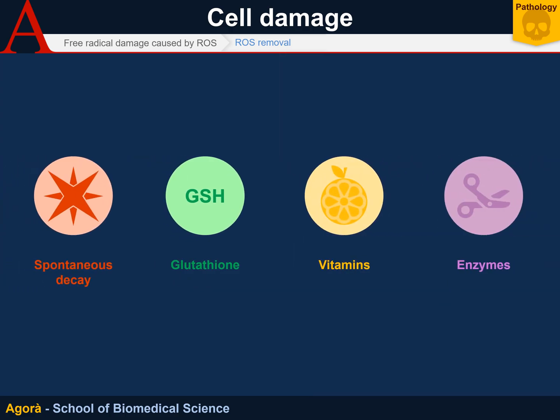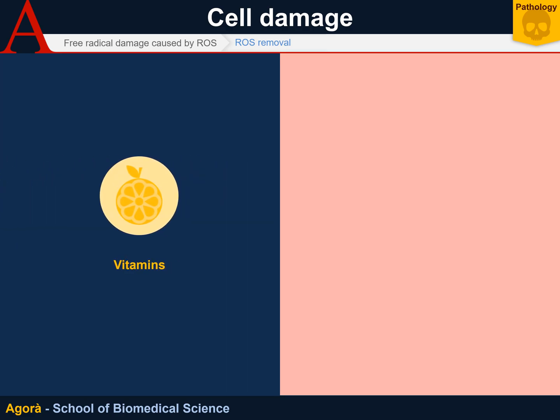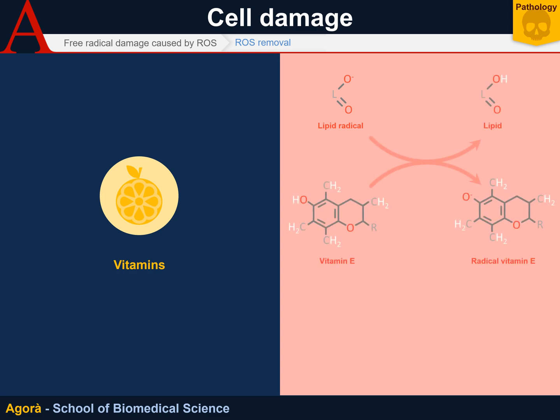Another form of anti-radical mechanism is represented by some vitamins, and especially by vitamin E and vitamin C. Vitamin E, as in the case of tocopherol, is capable of inactivating lipid radicals by transforming them into simple lipids, while becoming a tocopherolic radical itself. At this point, vitamin C, or ascorbic acid, intervenes and takes the extra electron of the radical vitamin E, becoming radical vitamin C. Vitamin C can actually create a form of resonance so as to be balanced despite the extra electron, and cannot be considered a dangerous radical.